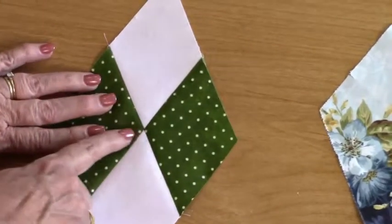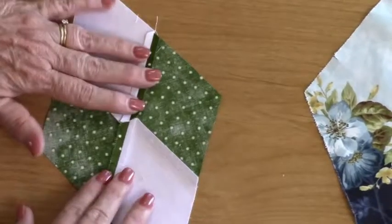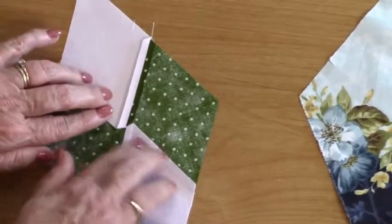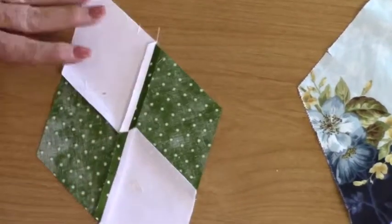So this is sewing the two together. As you can see, look at how perfect this is. I'm going to flip it over so you can see. What I ended up doing was, since these are pressed this way, this is pressed open to reduce the bulk.